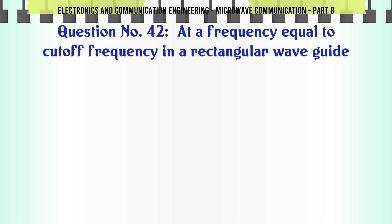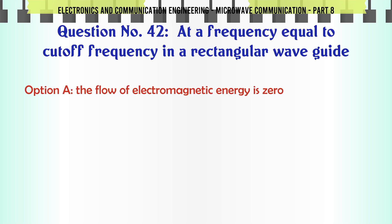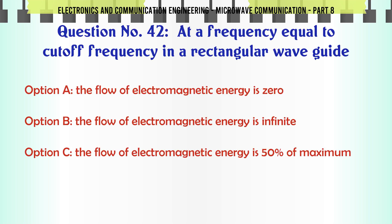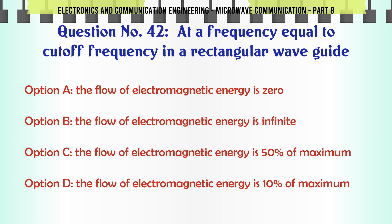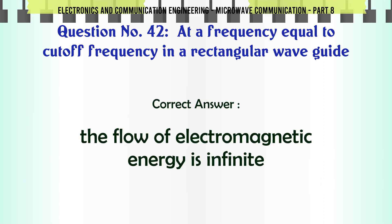At a frequency equal to the cutoff frequency in a rectangular waveguide — A. The flow of electromagnetic energy is zero, B. The flow of electromagnetic energy is infinite, C. The flow of electromagnetic energy is 50% of maximum, D. The flow of electromagnetic energy is 10% of maximum. The correct answer is: the flow of electromagnetic energy is infinite.